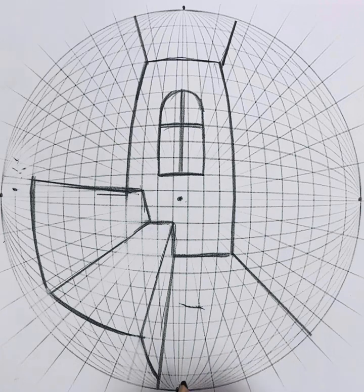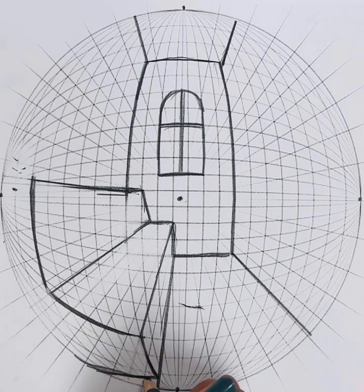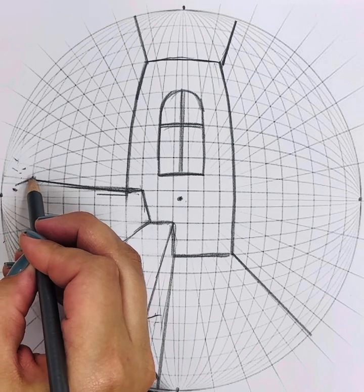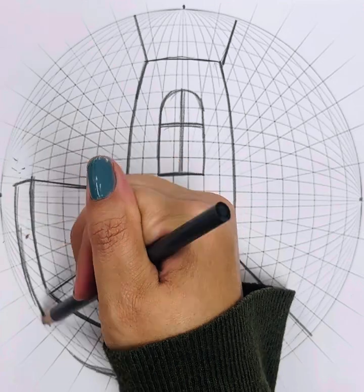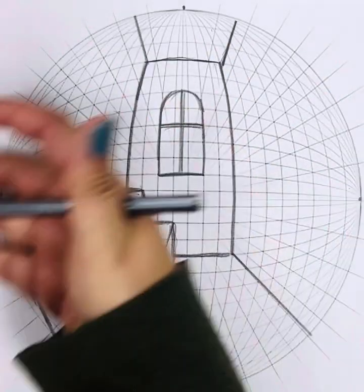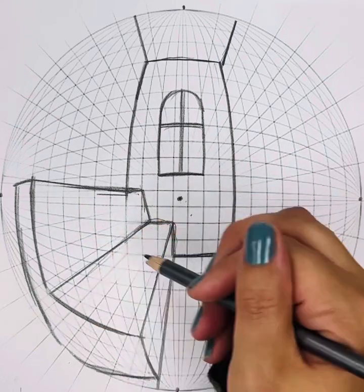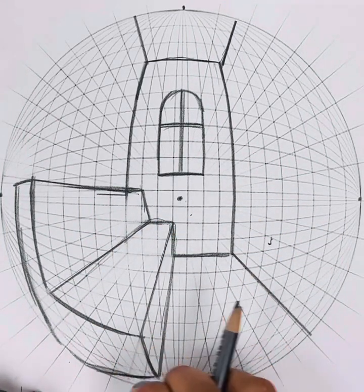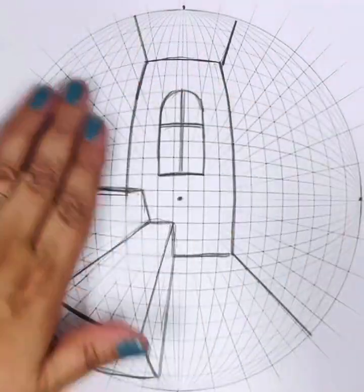Okay, and then we want to show that that is three-dimensional, so we need to see the edge over here. So we're going to go over. This is going to go back a little ways, it's going to go with that curve, and then come down. And we have the couch. You could add some decorations if you wanted: pillows, blankets.